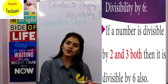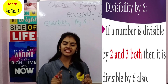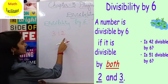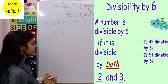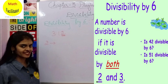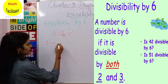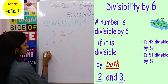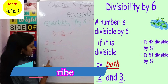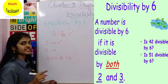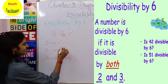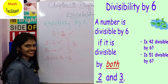Now let us talk about divisibility by 6. If a number is divisible by both 2 and 3, then it is divisible by 6. Take the example 312. Checking for 2: in the ones place you find 2, so it is divisible by 2. Checking for 3: add the digits — 3 plus 1 plus 2 is 6, and 6 is a multiple of 3, so it is also divisible by 3. Since both conditions are met, 312 is divisible by 6.